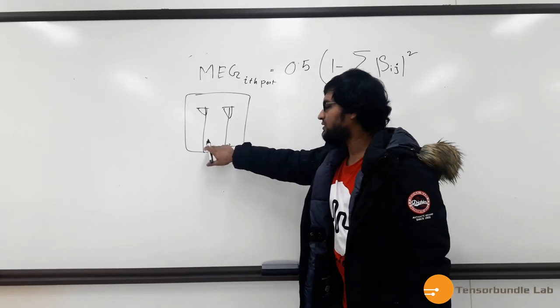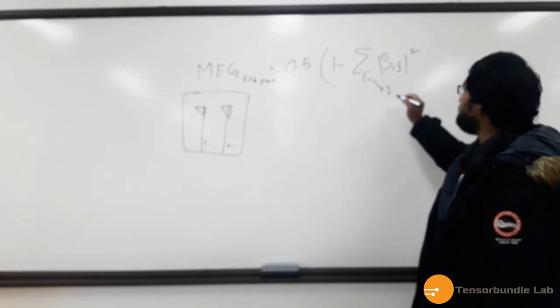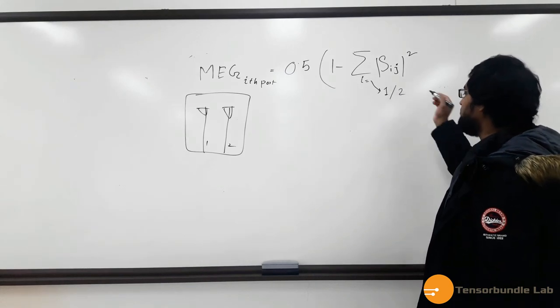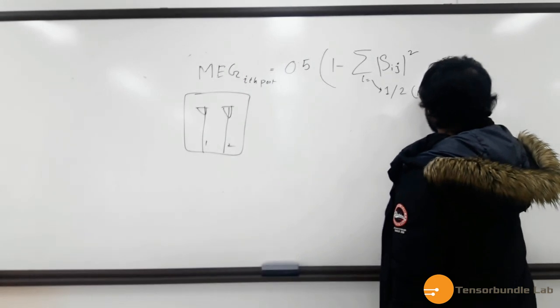For example, if you are calculating the MEG for the first port, then i will be equal to 1. And if you are calculating for the second port, then it will be 2. So this is the port's number.